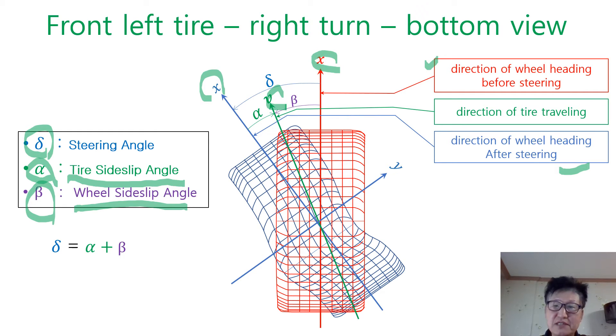Alpha is defined as tire side slip angle we are going to investigate. Please don't confuse steering angle and side slip angle. Steering angle is the mechanically determined quantity by driver. But tire side slip angle is depending on the characteristic of individual tire, road condition, vehicle speed, etc.